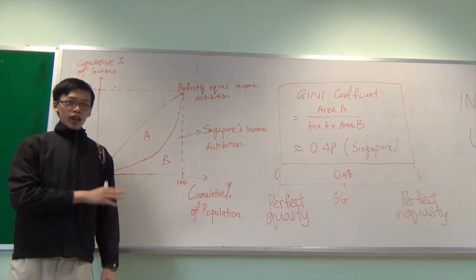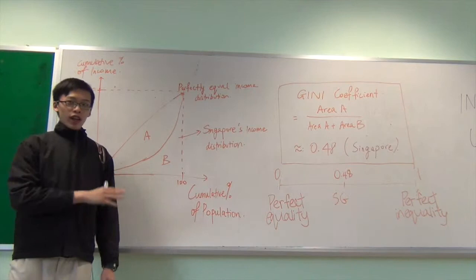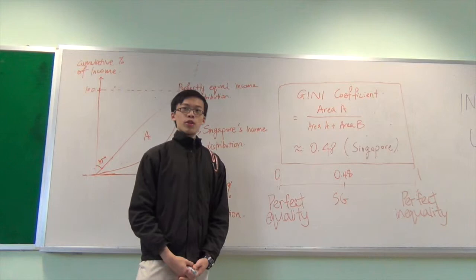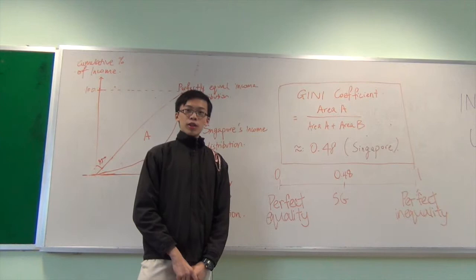As you can see over here, area A over A plus B is what we call the Gini coefficient which is what many countries use to quantify income inequality. And in Singapore's case, the Gini coefficient of Singapore is 0.48, which is one of the highest Gini coefficients in the world, indicating that the problem of income inequality is very severe in Singapore.